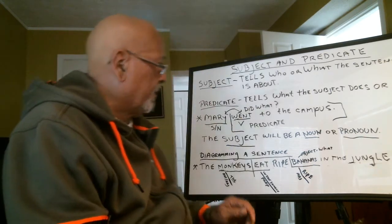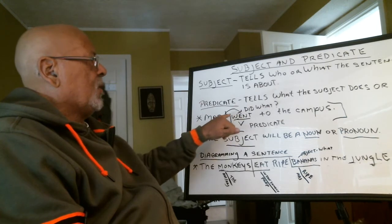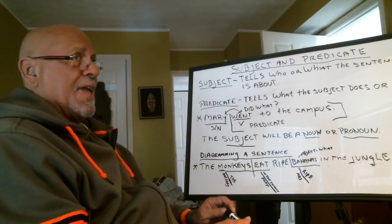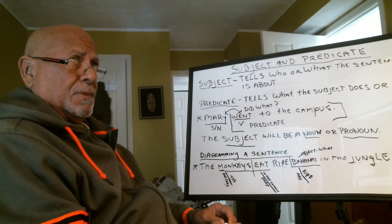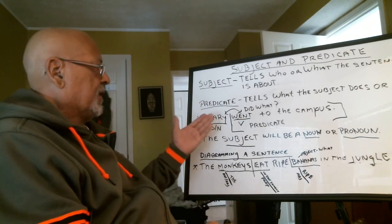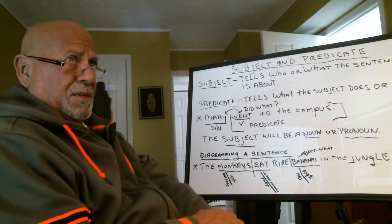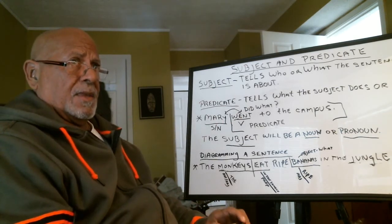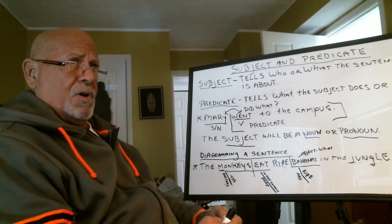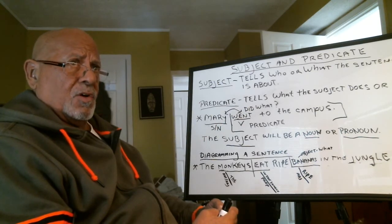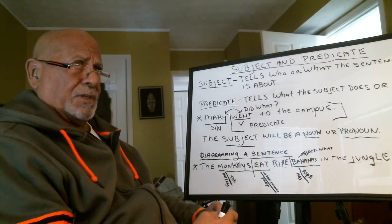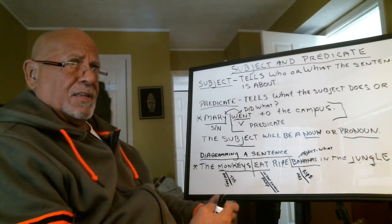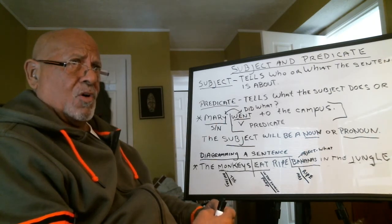Here's an example: 'Mary went to the campus.' Who are we talking about? What's the subject of this sentence? Mary is the subject — Mary is a noun. The subject can only be a noun or pronoun. The subject is not a verb, an adverb, an adjective, a conjunction, or a preposition — never. The subject is going to be a noun or a pronoun.